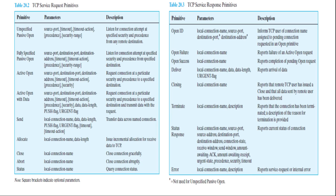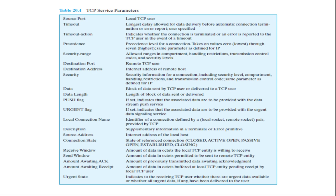You can go through this slide or you can go to the reference book for more information. There is another table of TCP service parameters providing a brief definition of the parameters involved. The two passive open commands signal the TCP user's willingness to accept a connection request. The active open with data allows the user to begin transmitting data with the opening of the connection. Some parameters include source code, timeout, timeout actions, data, data length, and others including local and remote TCP users.